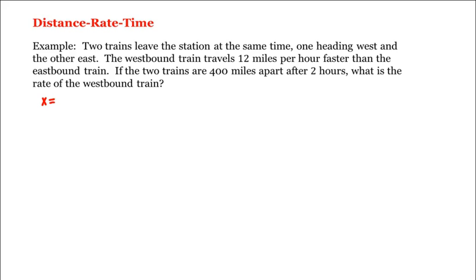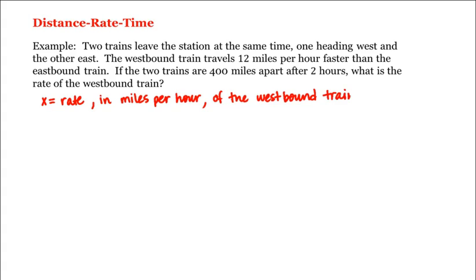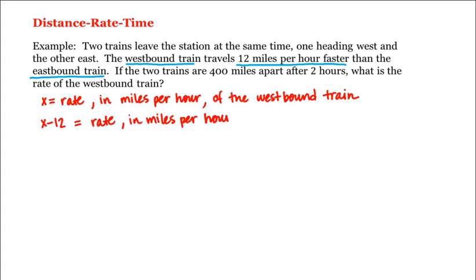Let X equal the rate in miles per hour of the westbound train. We're told the westbound train travels 12 miles per hour faster than the eastbound train, which means the eastbound train travels 12 miles per hour slower. Therefore, if X is the rate of the westbound train, then X minus 12 is the rate in miles per hour of the eastbound train.